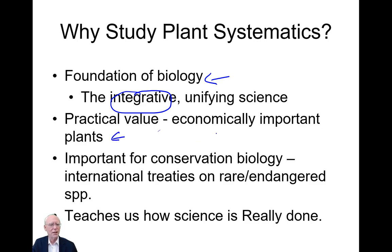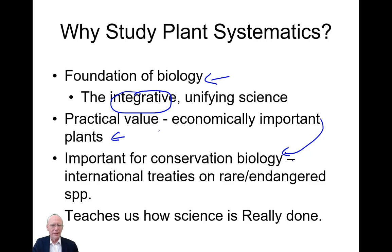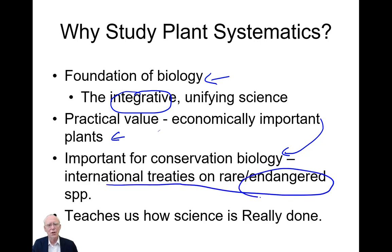We also work with economically important plants, and systematics is important in conservation. If a smuggler brings a protected plant into the country illegally, the border officer needs to make correct identifications to know whether the plant is really a protected species or just a common weed. All international treaties on endangered and protected plants depend very strongly on plant systematics and the naming of plants.